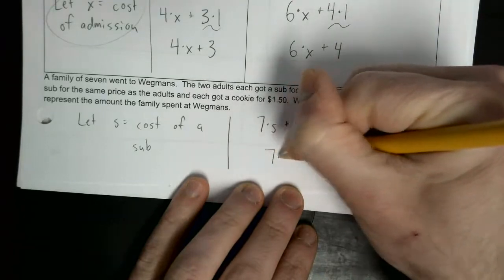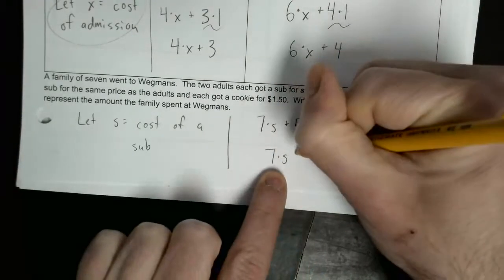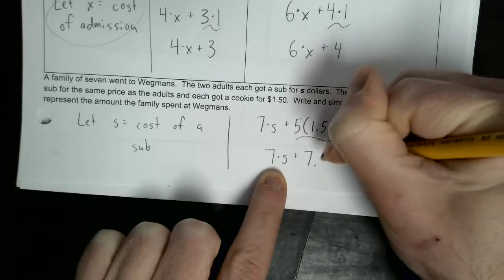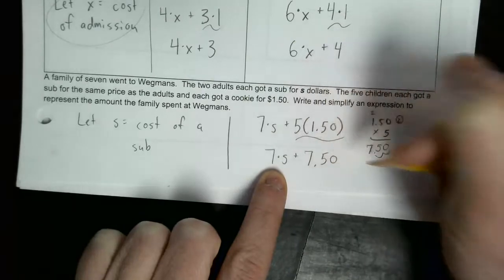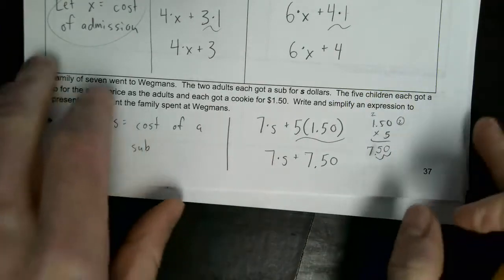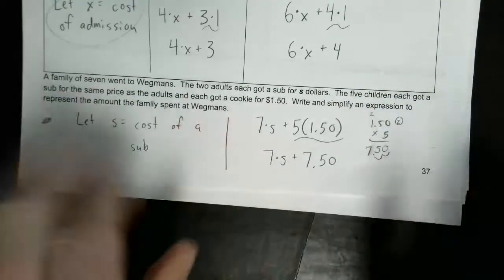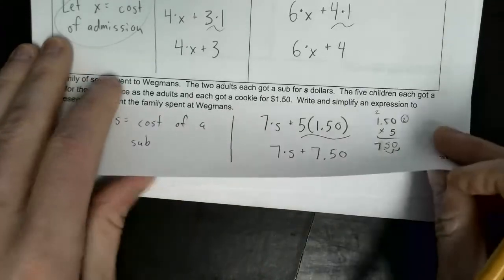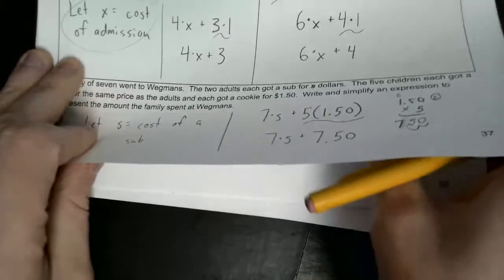So you've got 7 times S, which is the cost of the subs, plus $7.50, which is the total cost of the cookies. Depending on what the sub costs, that would tell you the total. That expression represents the total cost of all of what they spend at the Wegmans sub shop.